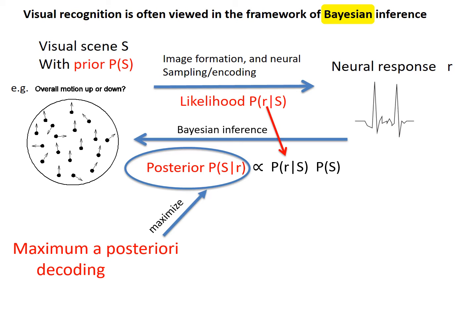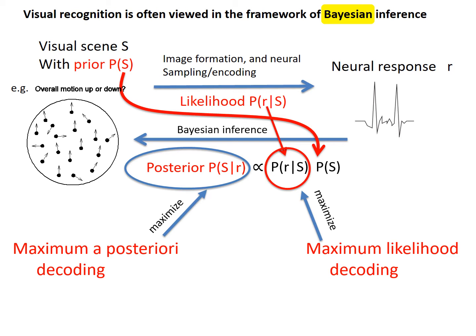By the Bayesian formula, this posterior probability is proportional to the likelihood and proportional to the prior probability. Therefore, if we use maximum likelihood decoding to choose the scene value S to maximize the likelihood, it also helps to maximize the posterior probability. If the prior probability P(S) is the same for all scene values S, then the posterior probability depends only on the likelihood, so that the maximum a posteriori decoding is the same as the maximum likelihood decoding.